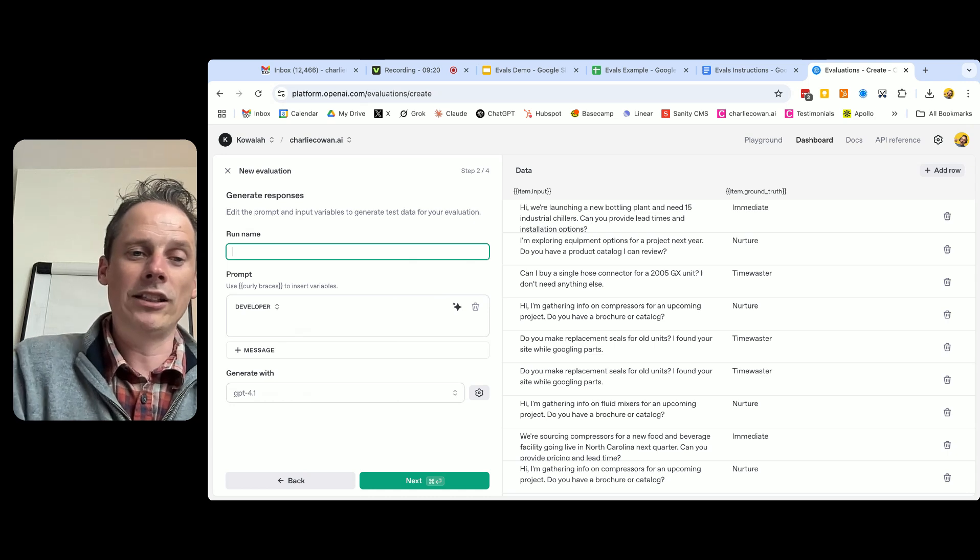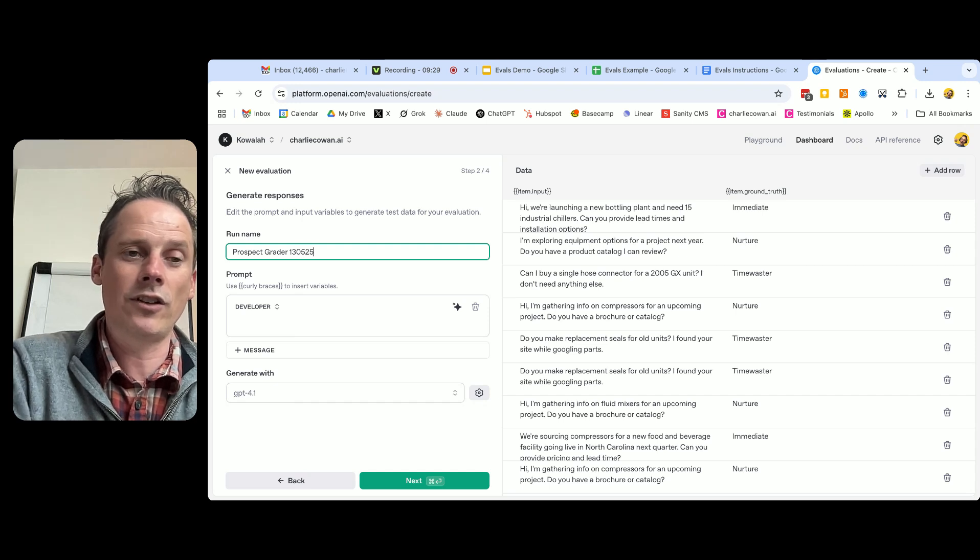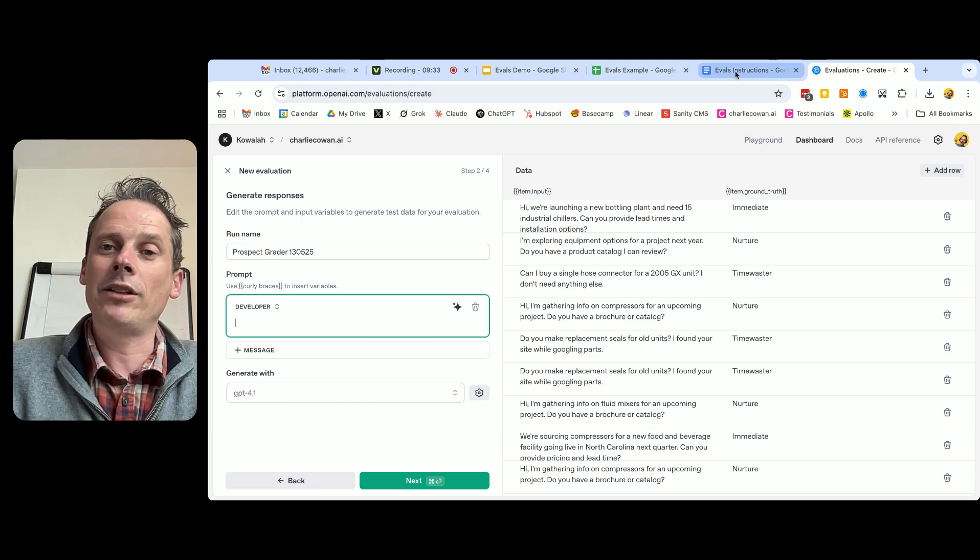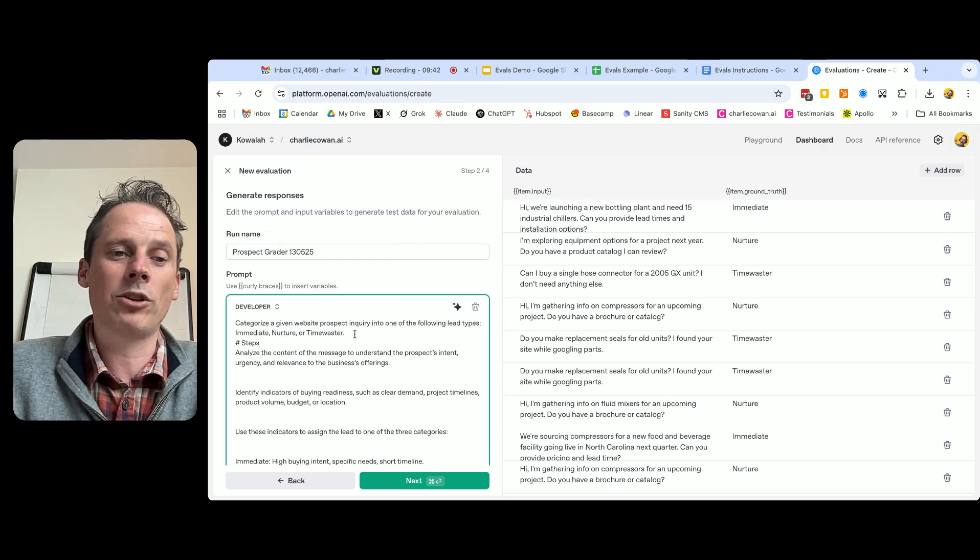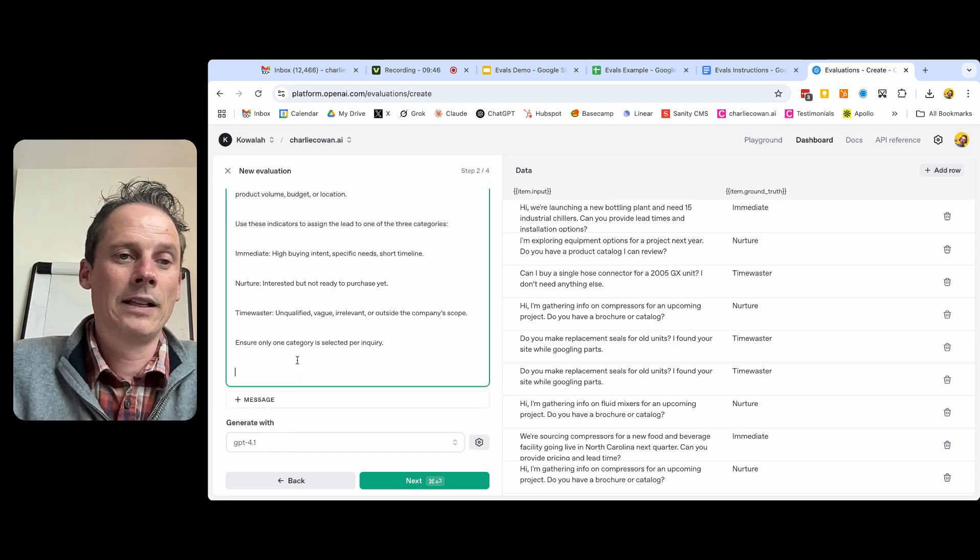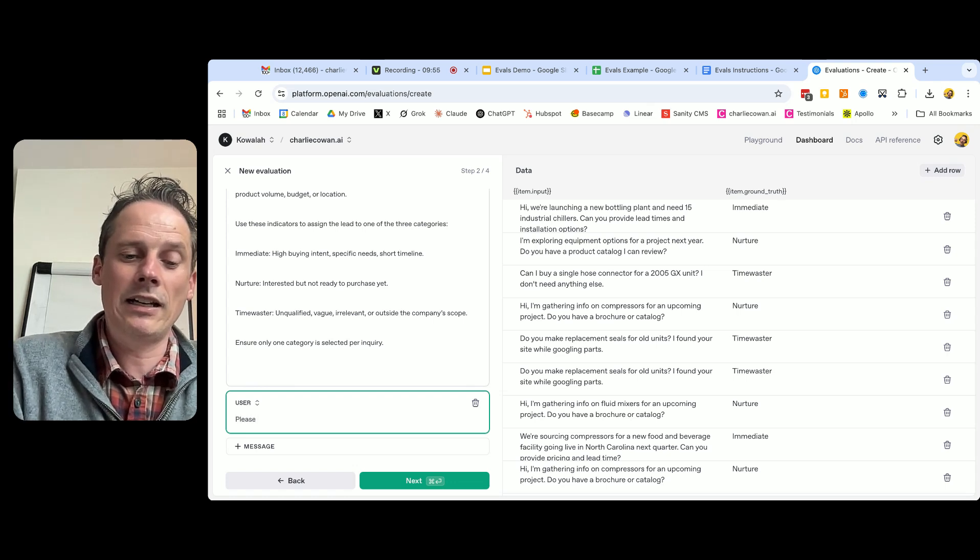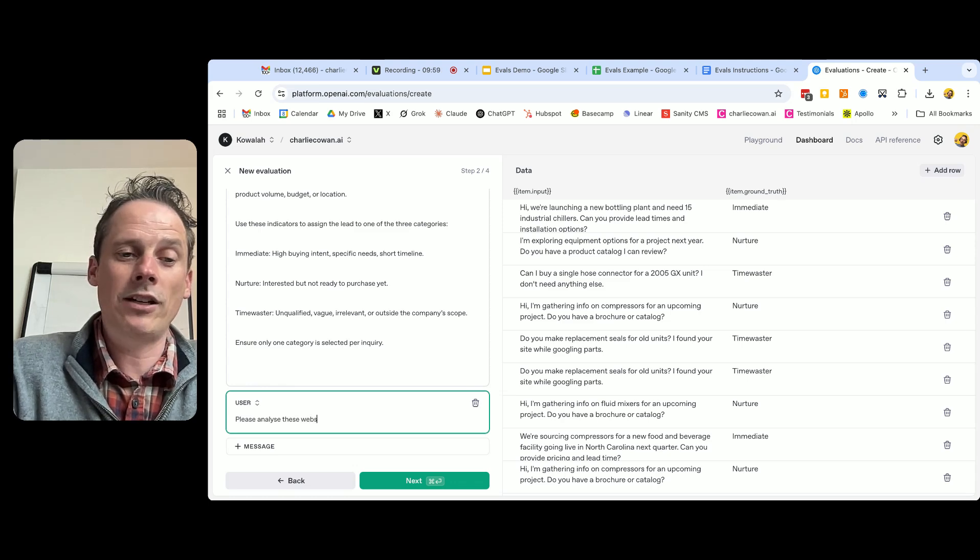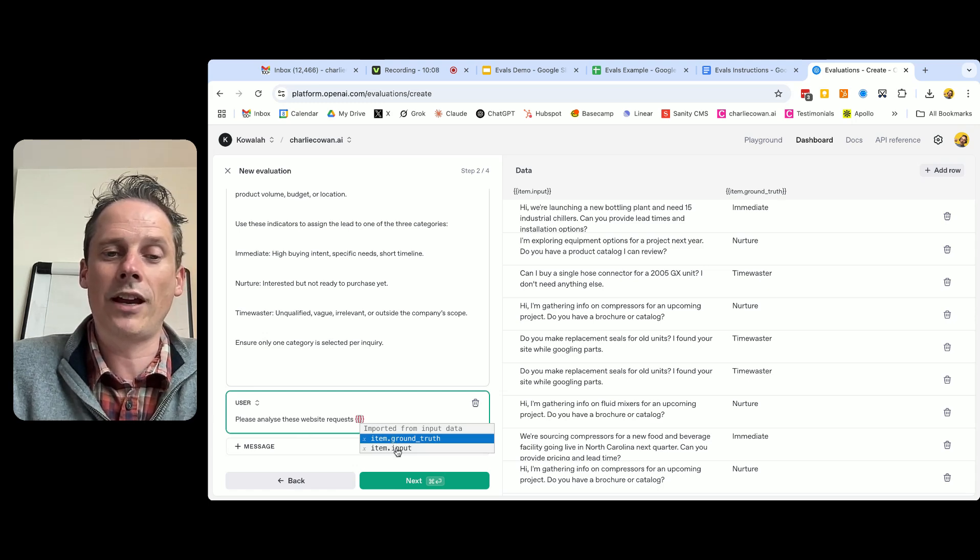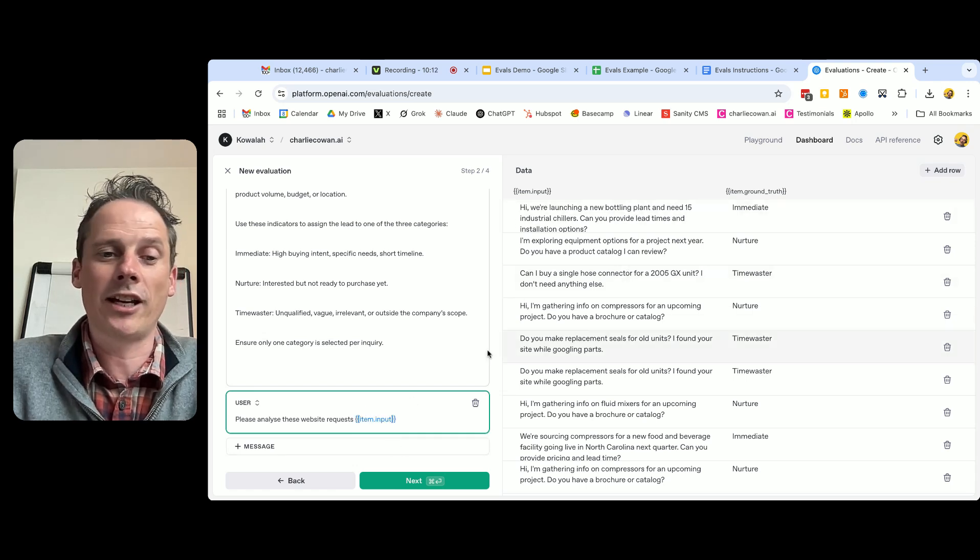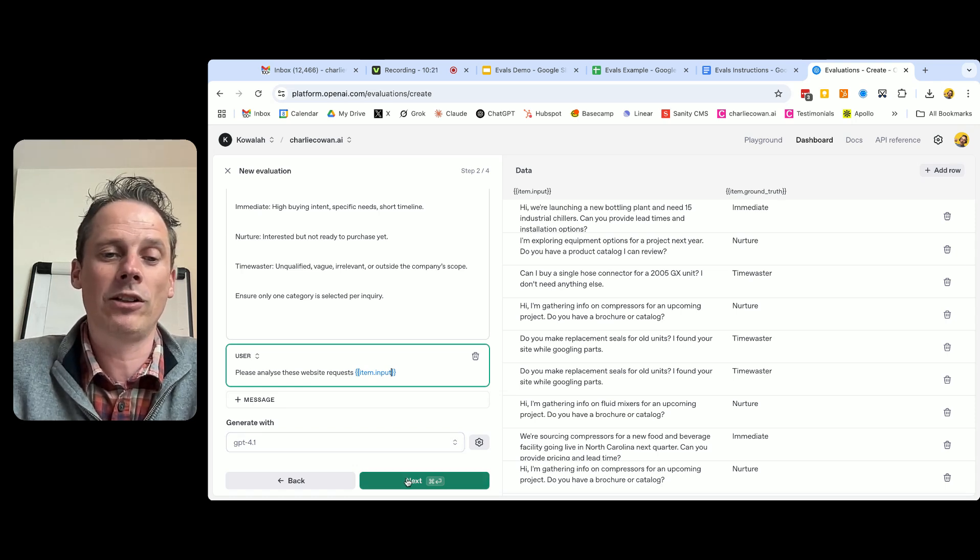Now we're going to go into creating our run. So I'm just going to say here we are doing our prospect grader, and the date is 130525. Now we're going to add in our prompt. And so let me just go to our prompt here and I'm going to copy that and pop that into the prompt. So this is the prompt: categorize a given website prospect into one of these three. Here are some examples. And then we're going to add in a user message where we're going to say please analyze these website requests. And we're going to use this curly braces tag and it's going to know that we've got ground truth and input, so it's the input that we want it to check against. And here we can choose which model. I'm going to use 4.1, which is the leading developer-focused model. I'm going to click next.